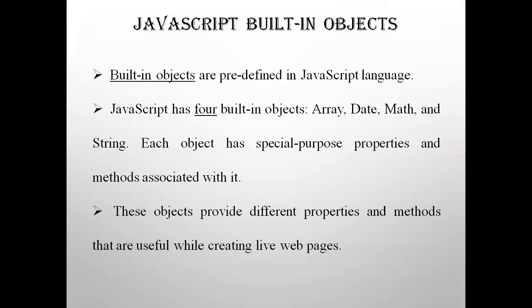Built-in objects are predefined objects in the JavaScript language. They are already defined, and JavaScript has four built-in objects: Array, Date, Math, Number, and String. Here we will be doing the String and the Number object. Each object has special purpose properties and methods associated with it, so we will be learning the string properties, string methods, number properties, and number methods.